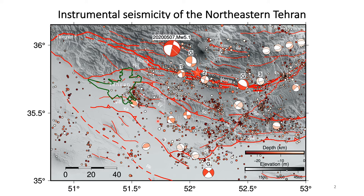Here I am showing the seismicity of the region recorded by the IRSC network, the Iranian seismological network. Colors show the depth of events, and they are all shallow, less than 25 km. Most of the seismicity is distributed on the Sorche fault, Garm Sor fault, Ray fault, Firus Gu fault, and also the Mosha fault, mostly on the central segment and partly on the eastern termination.